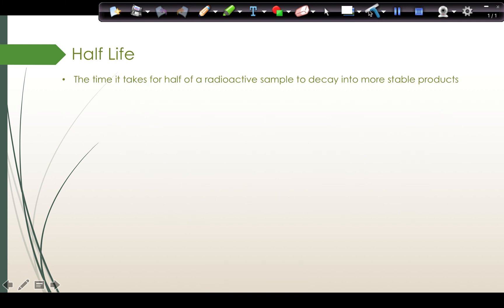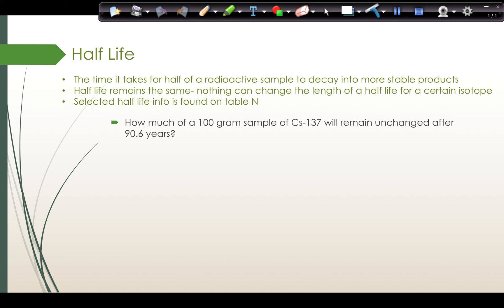When we talk about half-life, half-life is known as the time it takes for half of a radioactive sample to decay to more stable products. Half-life time remains the same. Nothing can change the length of a half-life for a certain radioisotope. We have selected half-life information found on table N. A question for half-life might look like this: How much of a 100-gram sample of cesium-137 will remain unchanged after 90.6 years?